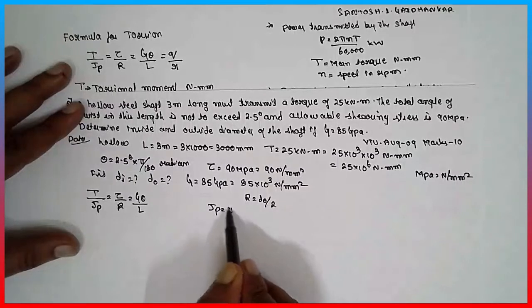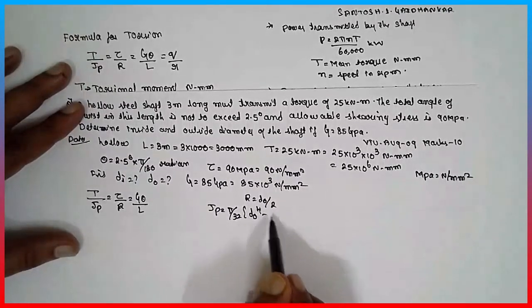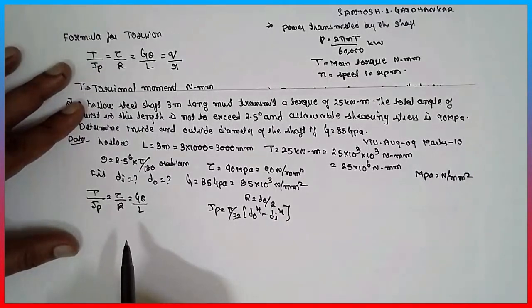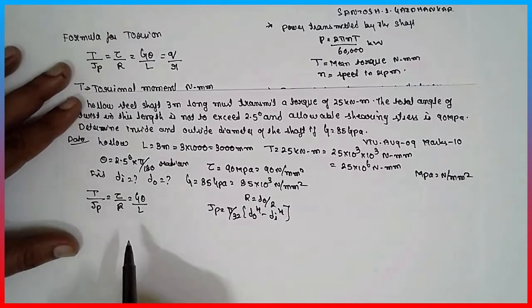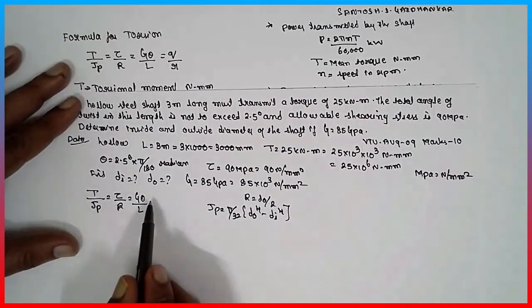Jp is nothing but pi divided by 32, outer diameter to 4 minus inner diameter to 4, where two annular comes in picture. Therefore, better to go for the combination of tau and theta, because theta value is given.